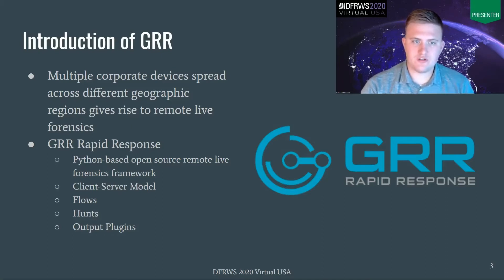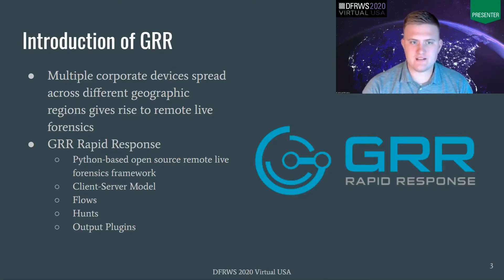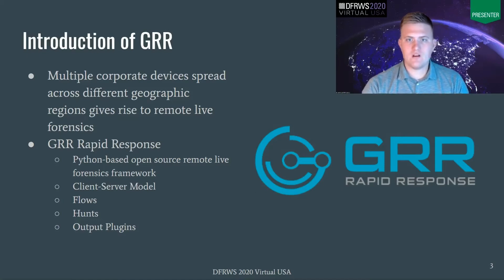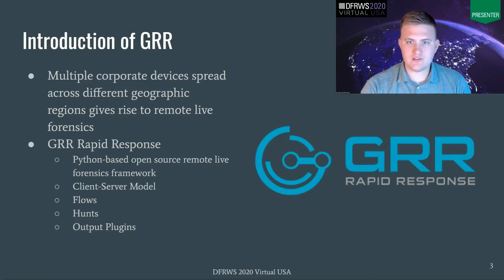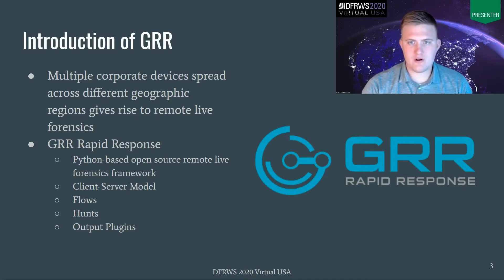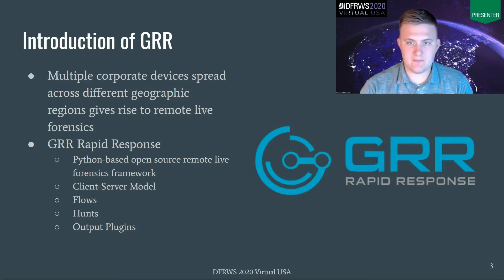To assist with this, Google developed a tool called GRR Rapid Response. GRR is a Python-based open source remote live forensics framework which uses a client-server model for its design. This means that from the master server you can query clients for different information. To do that, GRR uses what are called flows. Different examples of flows are network-based flows where you can query for network connections currently established on the client, live processes currently running on the client, and where applicable, you can even query to see if registry keys or certain files exist on the client.